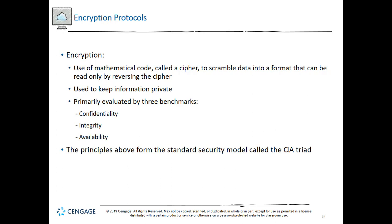It's important to understand that data exists generally in three states: at rest, in use, or in motion. When data is at rest, it is most secure when it is stored on a device protected by a firewall, anti-malware software, and physical security such as being inside a locked room. However, these protections are no guarantee, and additional protections include storing portions of the data in separate locations so that no single portion is meaningful on its own.